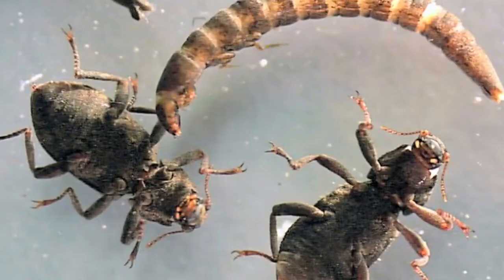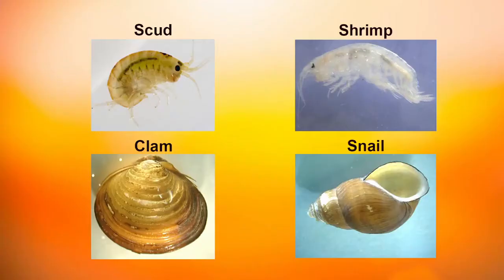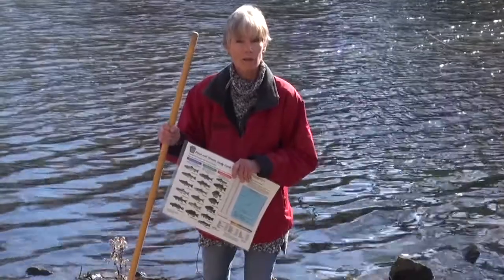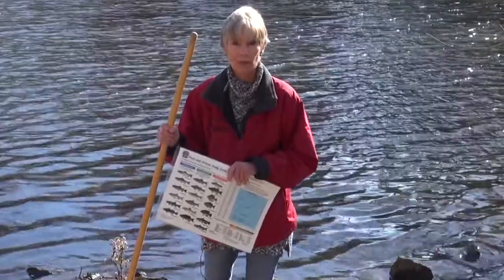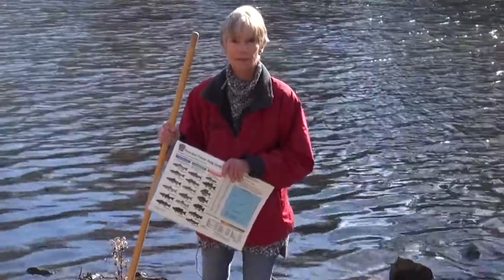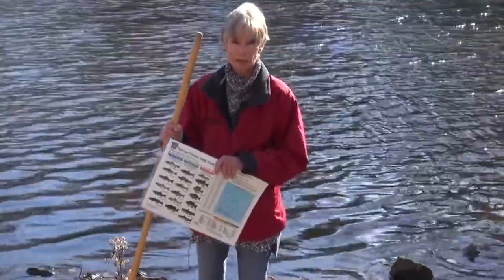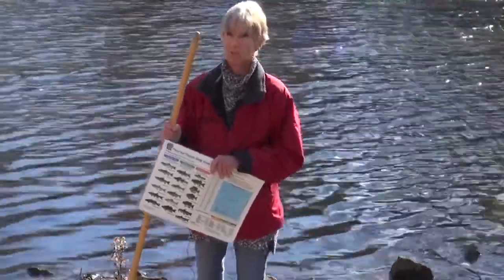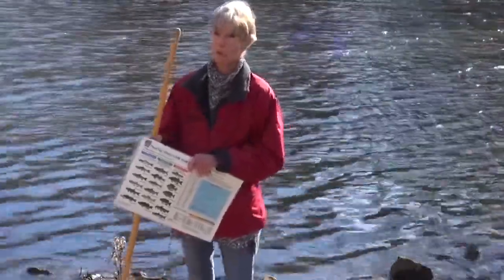We're also talking about different forms of beetles and scuds, shrimp, clams, and snails. All of these are benthic organisms which help us determine what the health of the stream is.